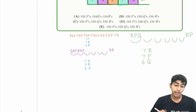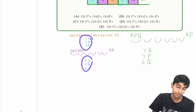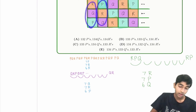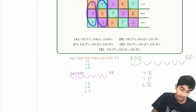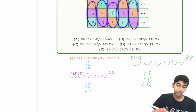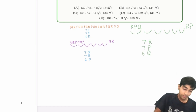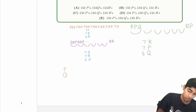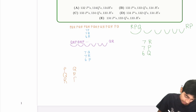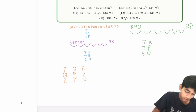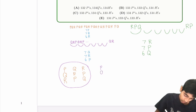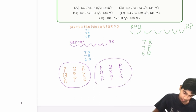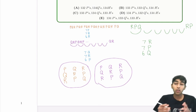Now the question is: how many of each type of column are there? Notice how the columns go cyclically: first a P,Q,R column, then a Q,R,P column, then an R,P,Q column, and then back to P,Q,R — this is one group of three. There are 20 total columns in the entire grid, so we can have six of these groups of three, which accounts for 18 columns.